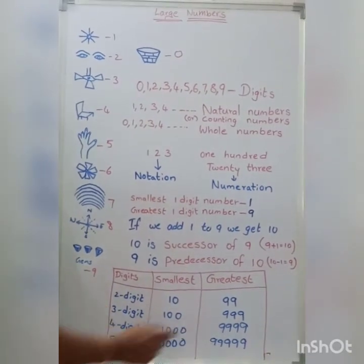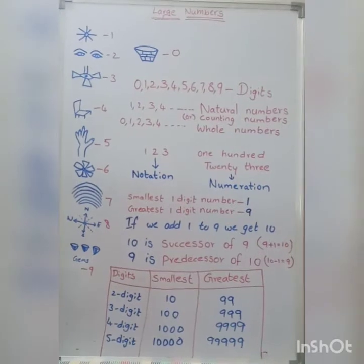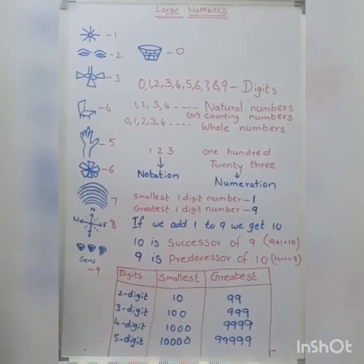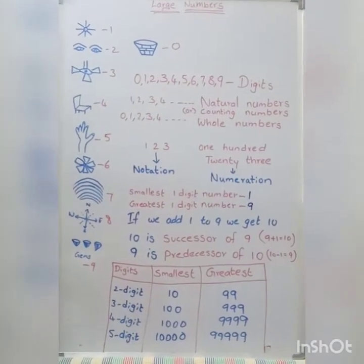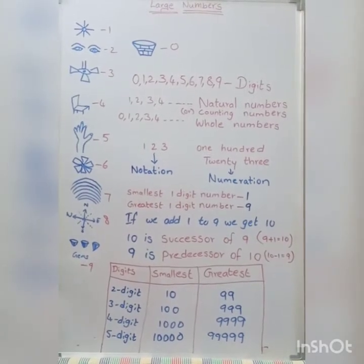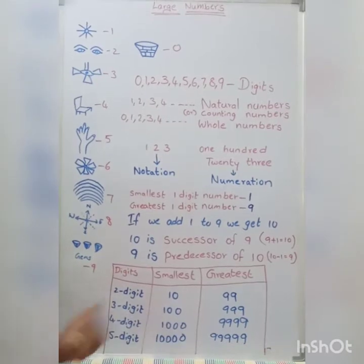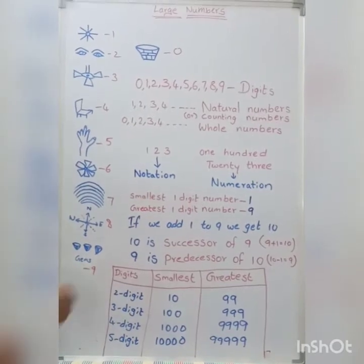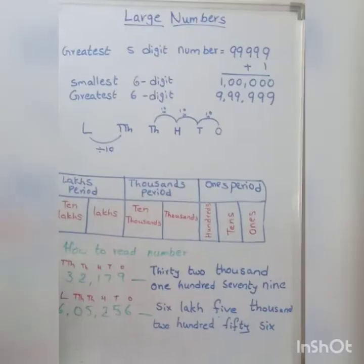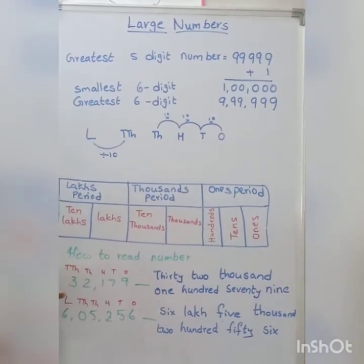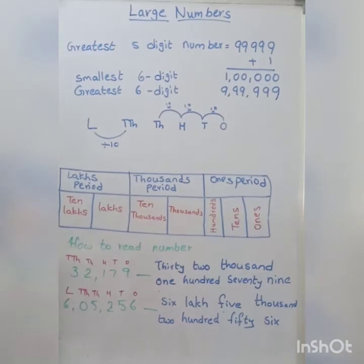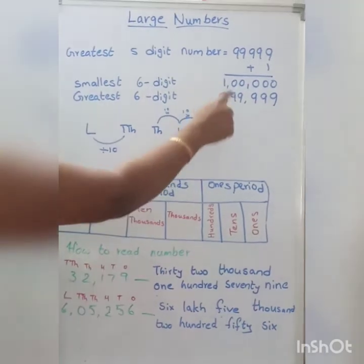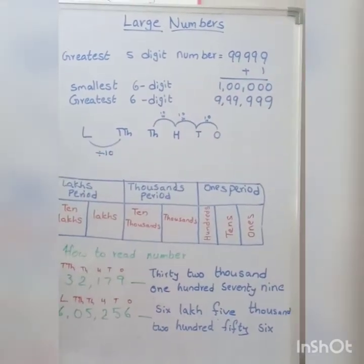The greatest 5-digit number is 99,999. Notice that smallest numbers start with 1 and the remaining digits are all 0s, while the greatest numbers consist of only 9s. If asked for the greatest 5-digit number: 99,999. Adding 1 to that gives us 1 lakh — the smallest 6-digit number.